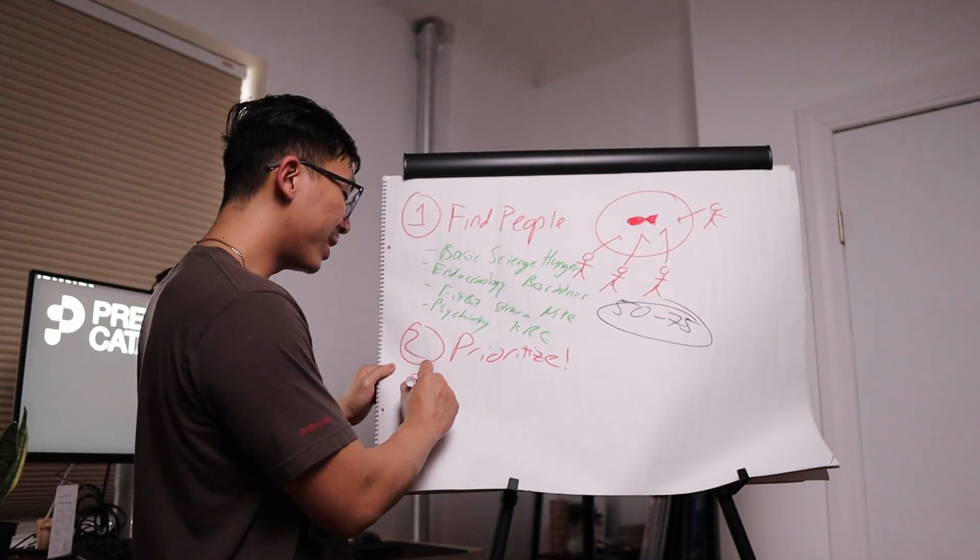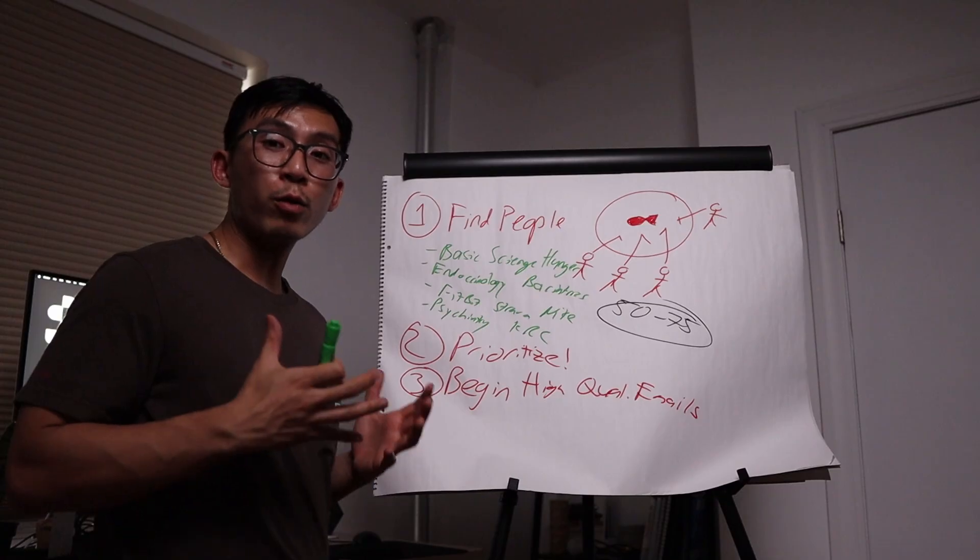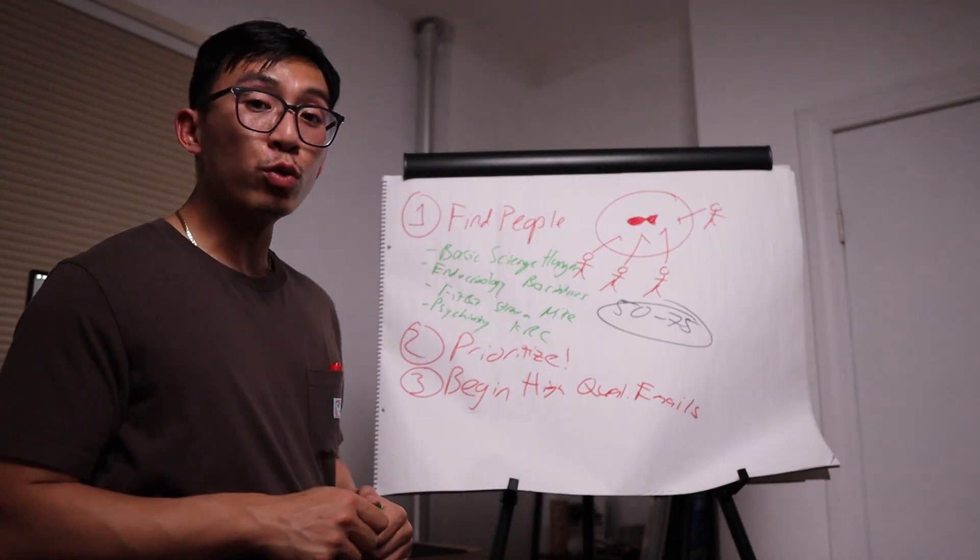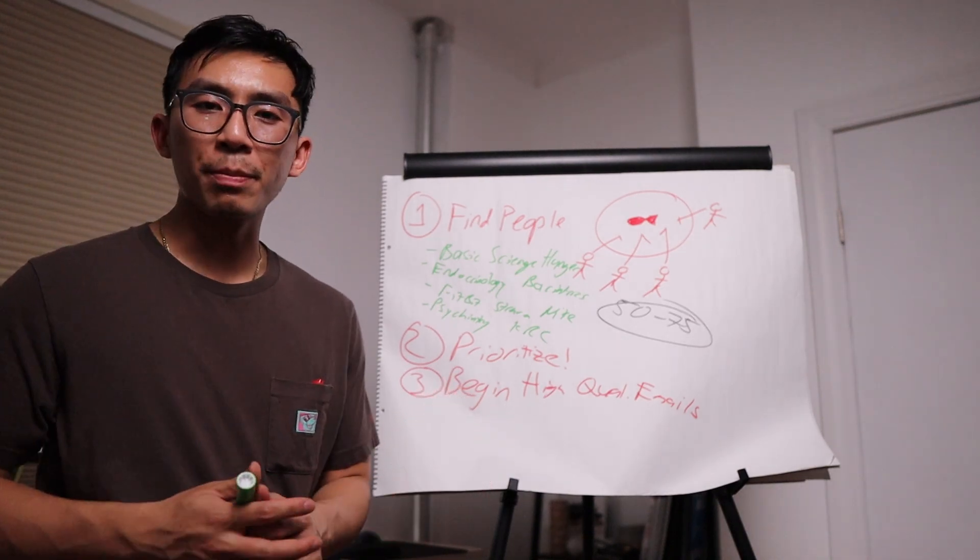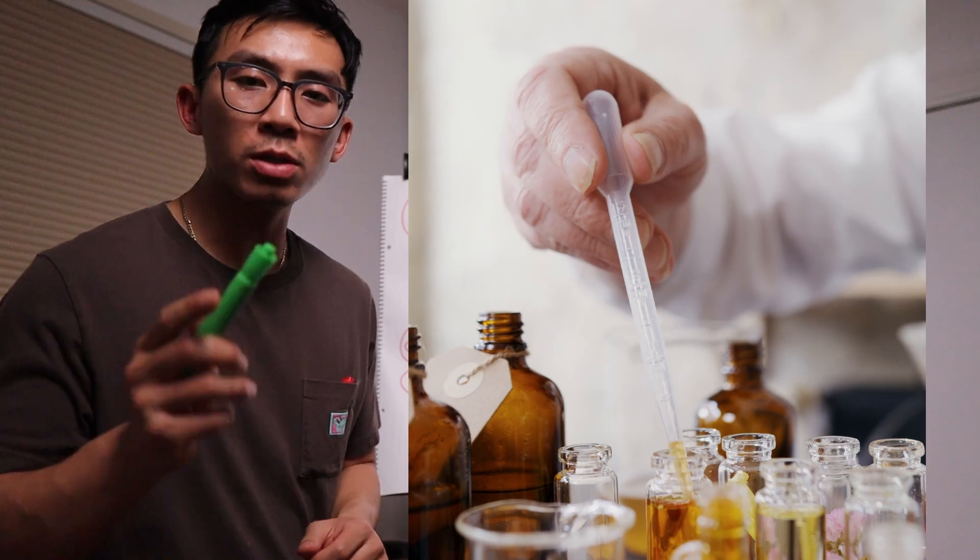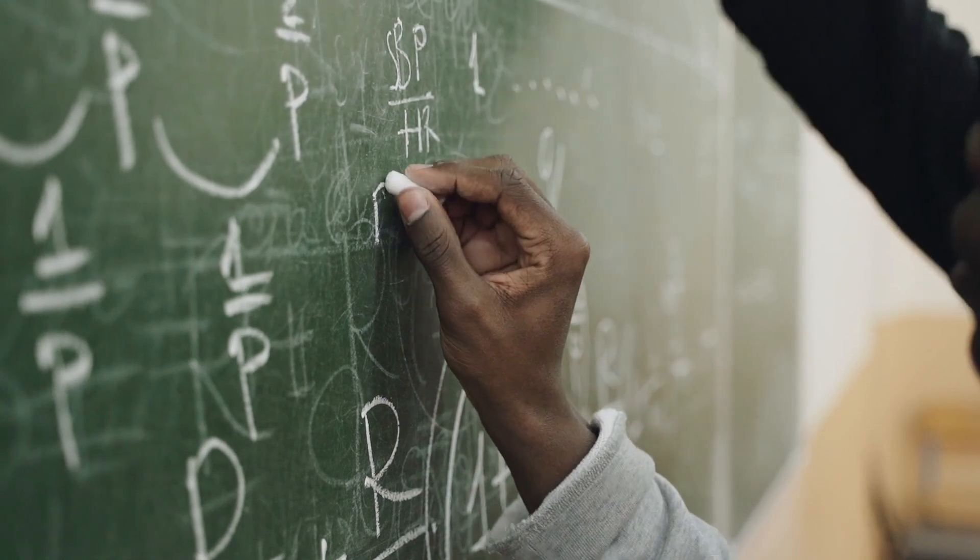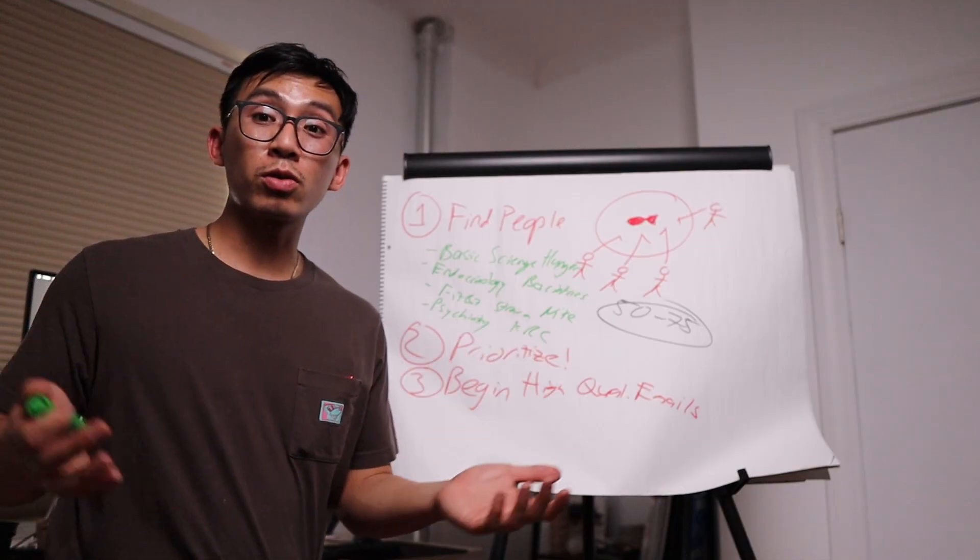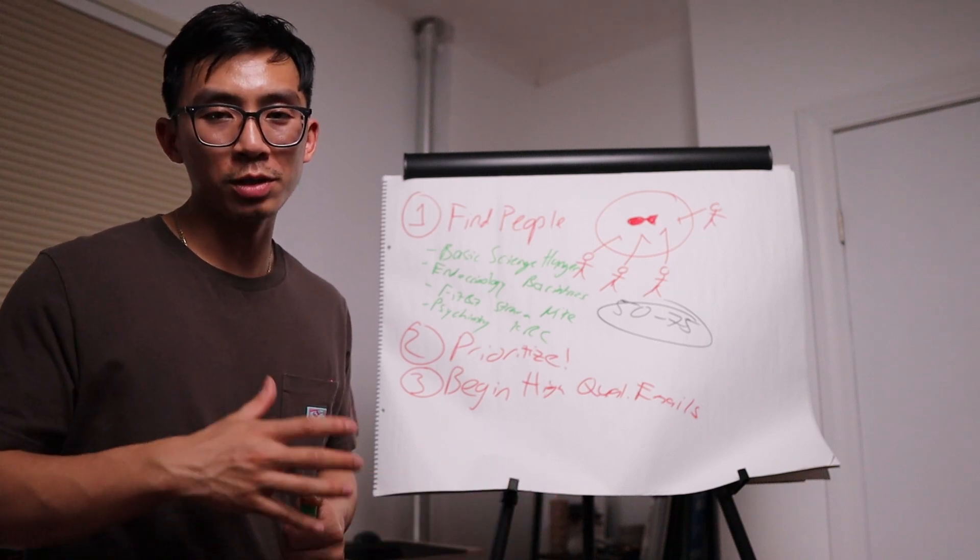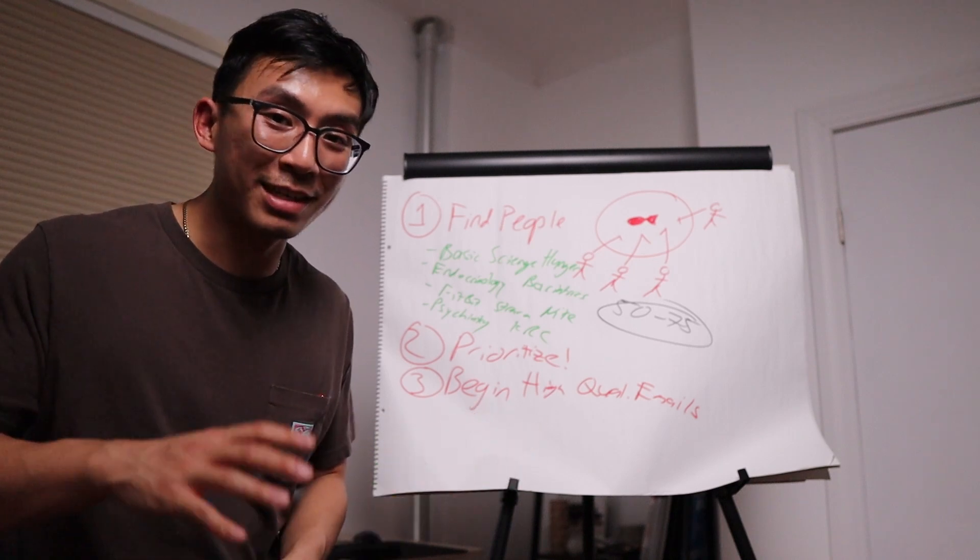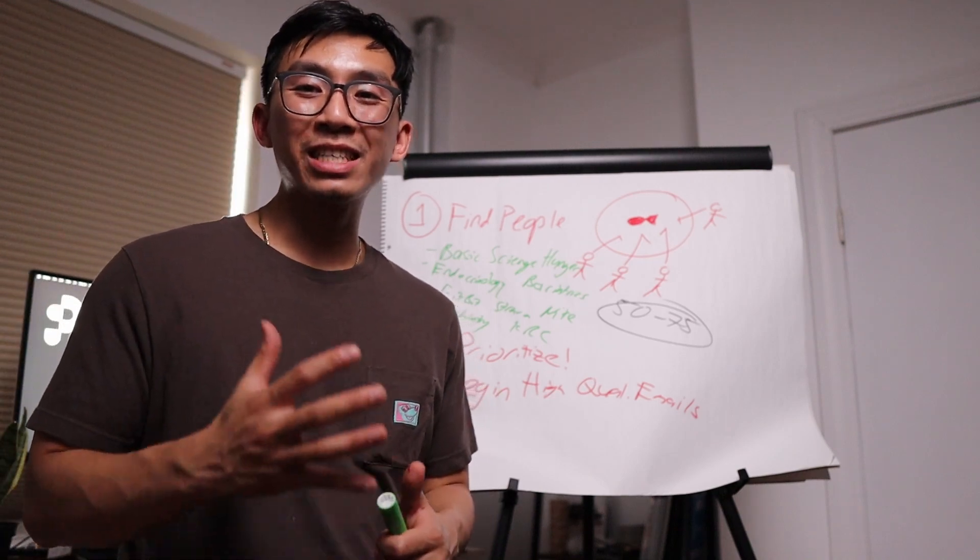And once you have that, step three is to begin writing high quality emails to this tier one list. And I want you to remember the value that you have during this stage of your training. It's not having some specific skillset, like being able to pipette gracefully. Anyone can teach anyone to do that. It's not having passed some specific class, like organic chemistry lab, because those skills aren't really relevant. And it's certainly not having some silly certification, like human CD training for human subjects, because that stuff you can complete in 30 minutes.